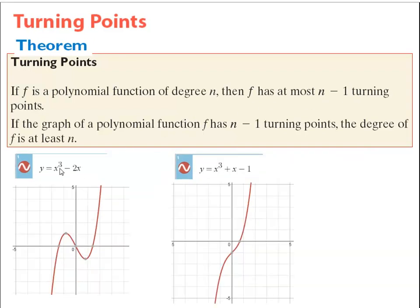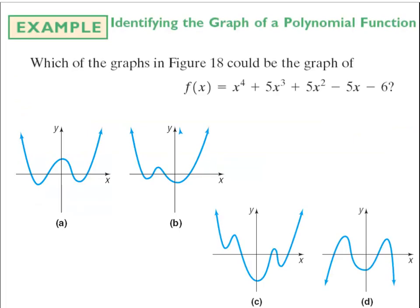For example, a degree 3 polynomial should have at most 3 minus 1, or 2 turning points. One illustration has 2 turning points, while another third-degree polynomial has 0 turning points — it's always increasing — and both still satisfy the theorem. So we can use turning points as a tool of analysis to quickly analyze graphs.